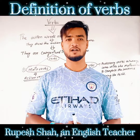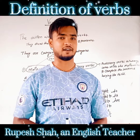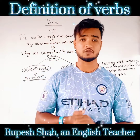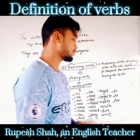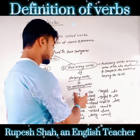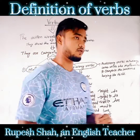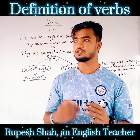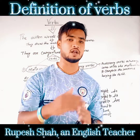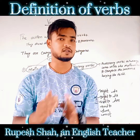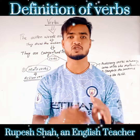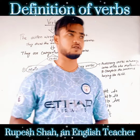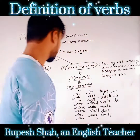I am sorry for that mistake. The 24 auxiliary verbs are: is, am, are, was, were, have, has, had, can, could, shall, should, will, would, do, does, did, ought to, used to, need to, dare, and must — according to English grammar.